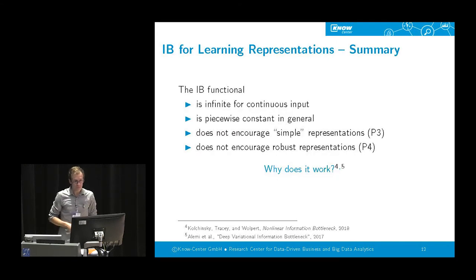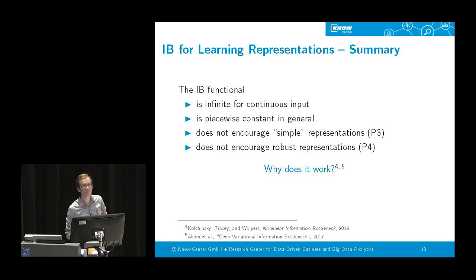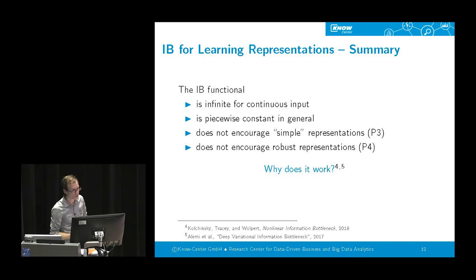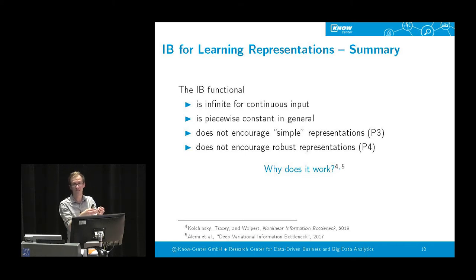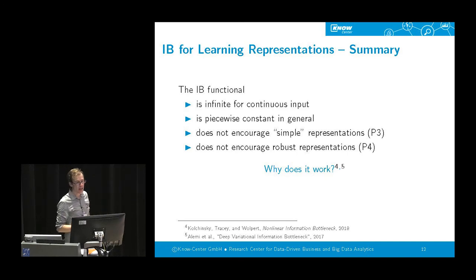In summary: the functional is infinite for continuous input, it is piecewise constant in general — these are computational problems — and it does not encourage simple or robust representations. The question is then: why does it seem to work? People have previously shown it produces nicely separated clusters. So what are the actual ingredients that make it work?